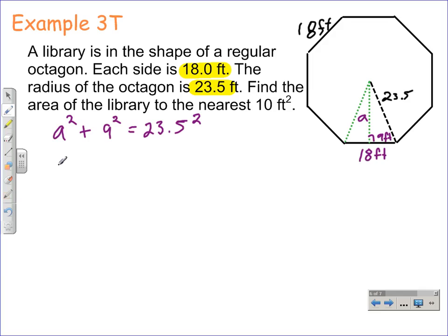Now doing this on your calculator, you can do 23.5 squared subtract 9 squared. If you wanted to do that by showing the math, that's a pretty simple process: a squared plus 81 is equal to 23.5 squared, which is 552.25. We would subtract 81 from both sides.